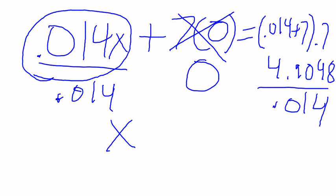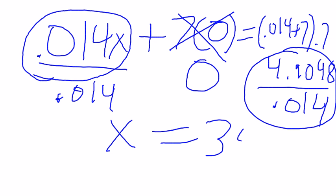After we do that we get x equals 350.7. Because it's velocity it's meters per second.